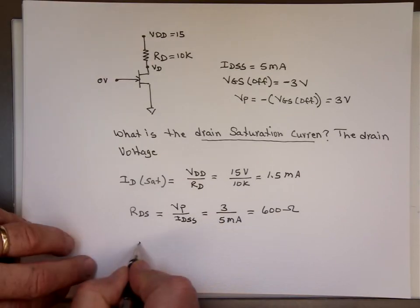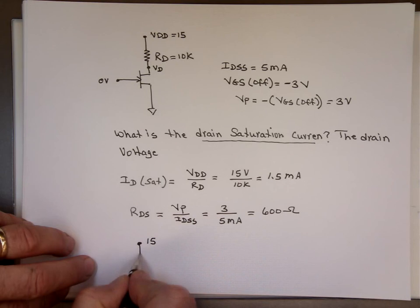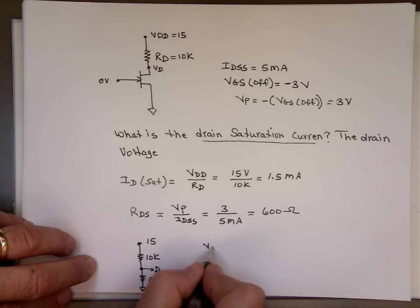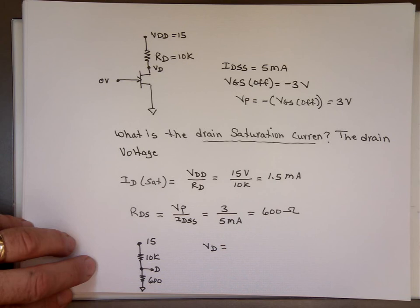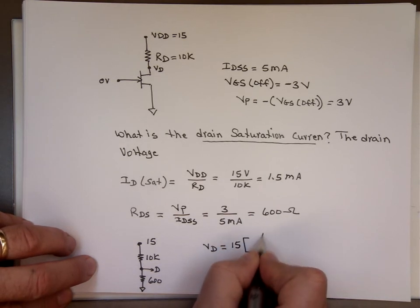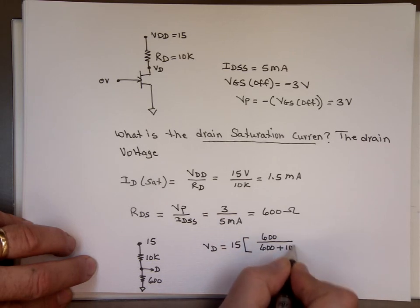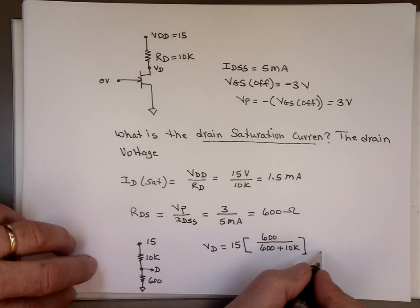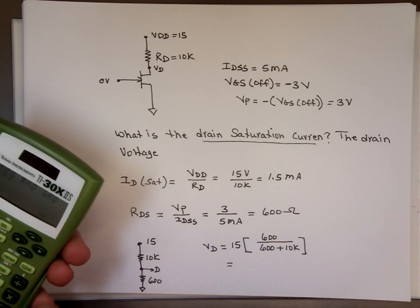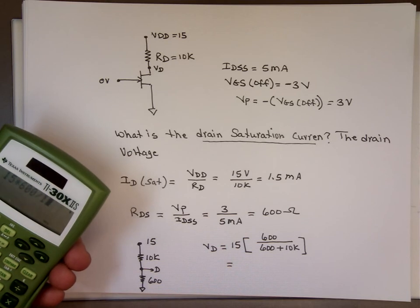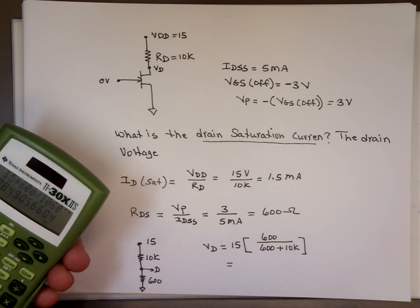So if we take that circuit, which is 15 here, 10K here, and now replace the JFET with 600 ohm, and there's the ground. And that's your D here. Can you find VD? That's voltage division. It's 15 times 600 over the sum of them, which is 600 plus 10K. And if we do the math, 15 times 600 divided by 10,600 equals 0.849 volts.